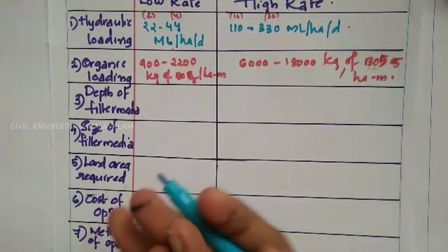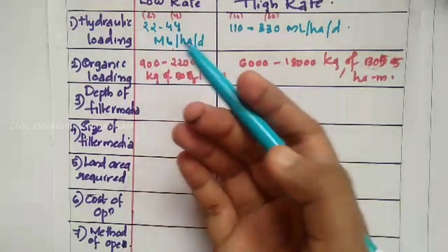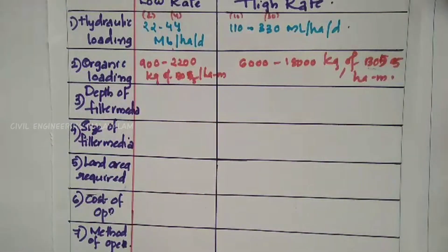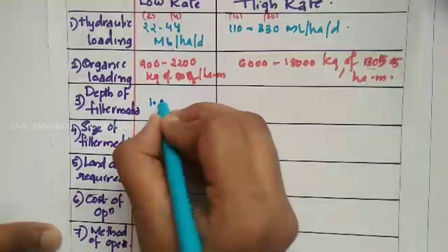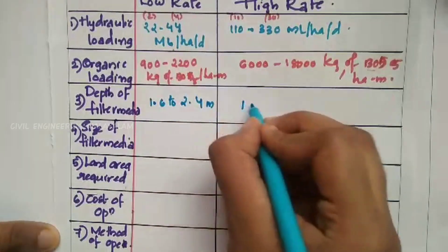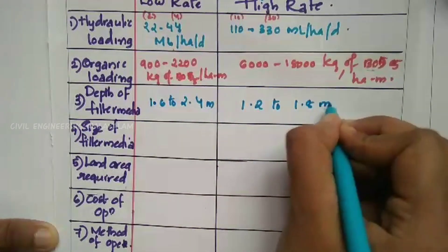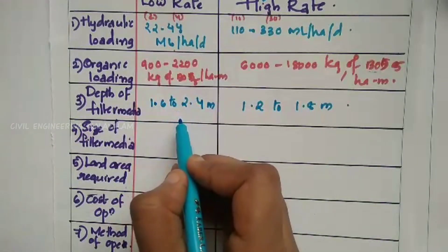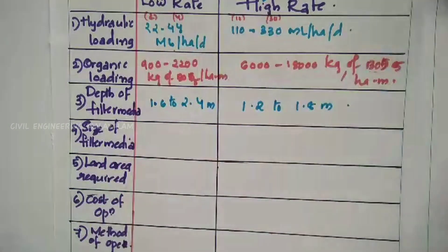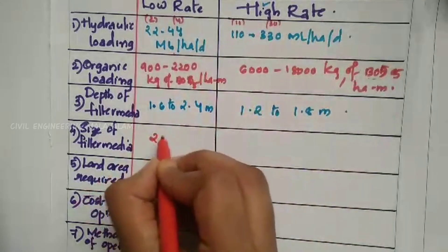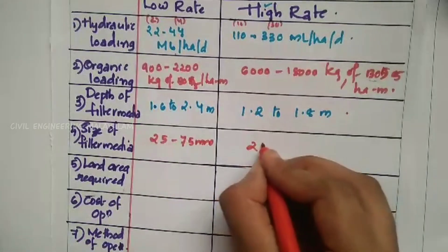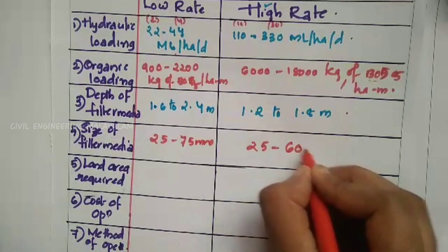Next is the depth of the filter media. We can provide 25 to 75 mm generally for low rate filter media size. For high rate, we can provide 25 to 60 mm.